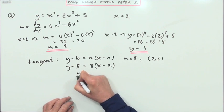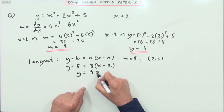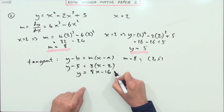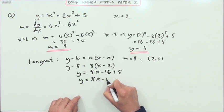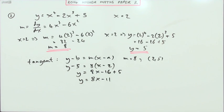However, let's finish this off. So, y is 8x minus 16 plus 5, so y equals 8x minus 11. There, I'm going all the way down to there.